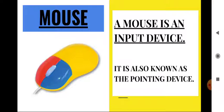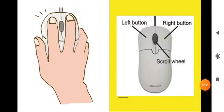Looking at this image, you can find the two buttons of the mouse — the left button and the right button. The mouse also has a scroll wheel at the center, between the two buttons.